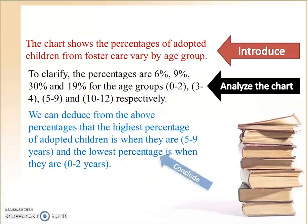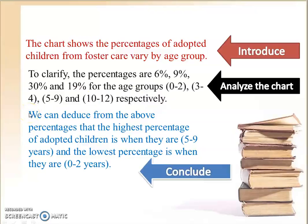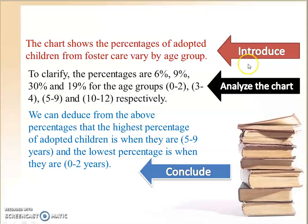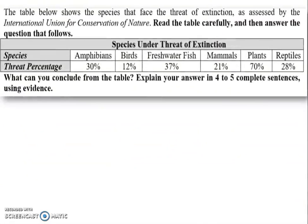Step three — conclude. You can start with 'therefore' or 'thus.' We can deduce from the above percentages that the highest percentage of adopted children is when they are five to nine years old, and the lowest percentage is when they are zero to two. If you mention only the highest percentage, that's enough. If you add a reason, that's also accepted. So the paragraph wraps up with introduction, analysis, and conclusion.